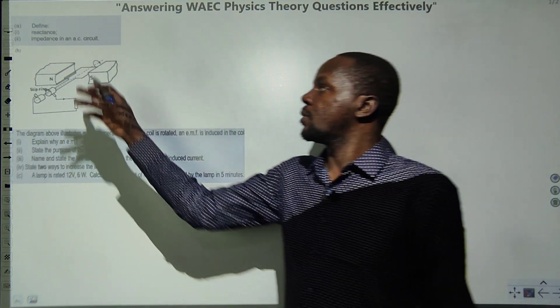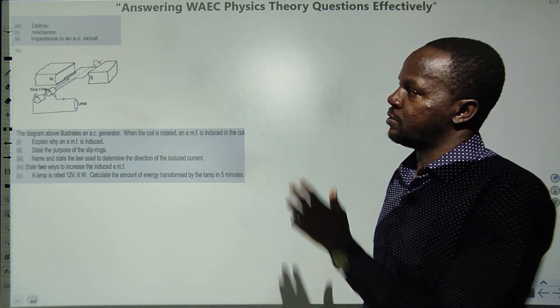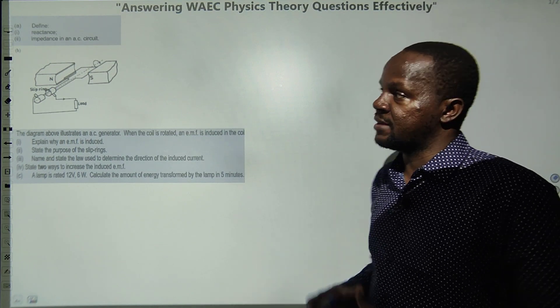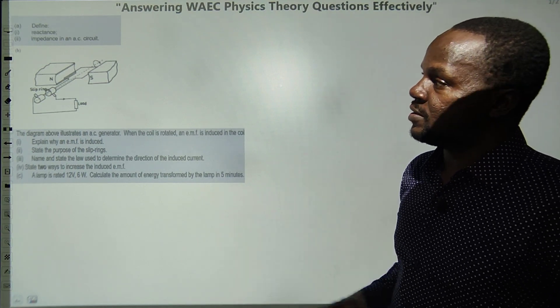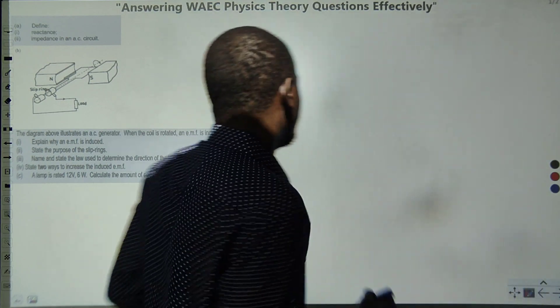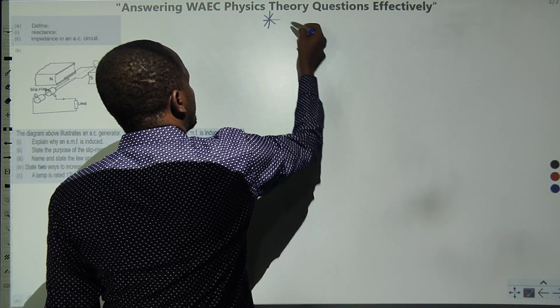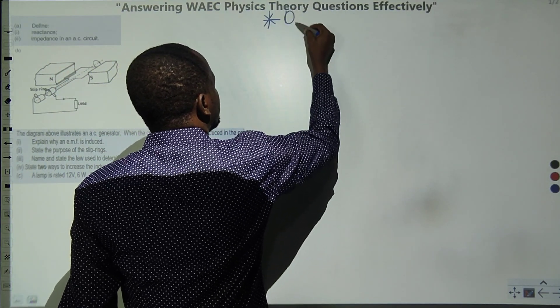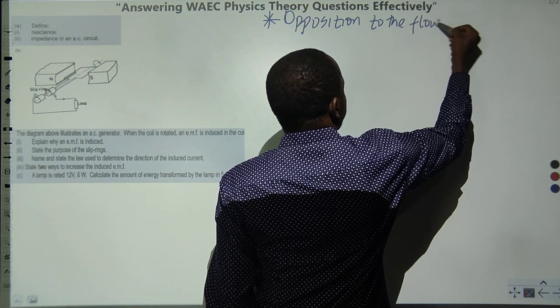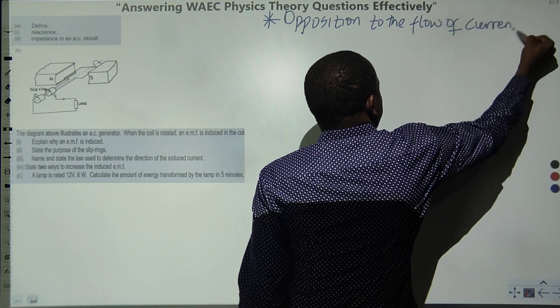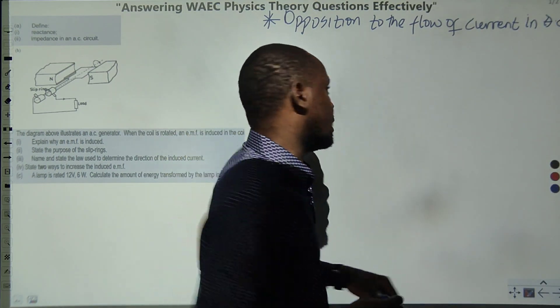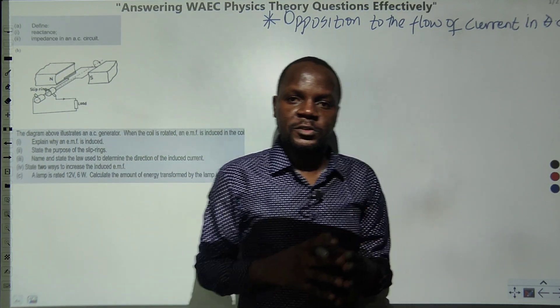You have to define reactance. The big part of it says we are to define impedance in an AC circuit, so that means both reactance and impedance are seen in AC circuits. Now this is the definition you're expected to give. You are expected to write for the examiner to know that when you talk about reactance we are talking about opposition to the flow of current in an AC circuit.